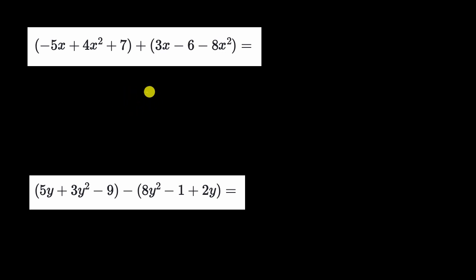All right, now let's do this together. So this first one, we are adding two polynomials, and I could just rewrite this as negative five x plus four x squared plus seven, and since I'm adding this entire second polynomial, I could just say this is going to be plus three x minus six minus eight x squared.